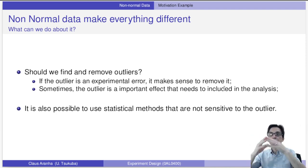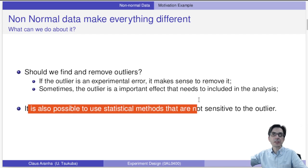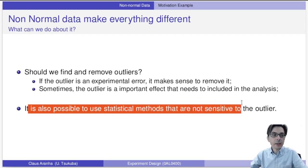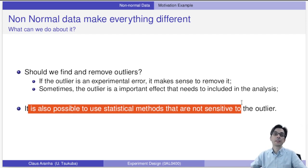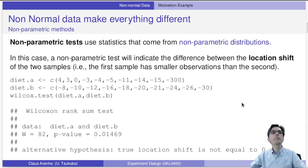For example, some medicine could affect someone very strongly. In such cases, it is possible to use statistical methods that are not sensitive to that outlier. The outlier is violating the assumption of normality and the assumption of equality of variances, so if we can use a statistical method that does not make those assumptions, we can still analyze the data.